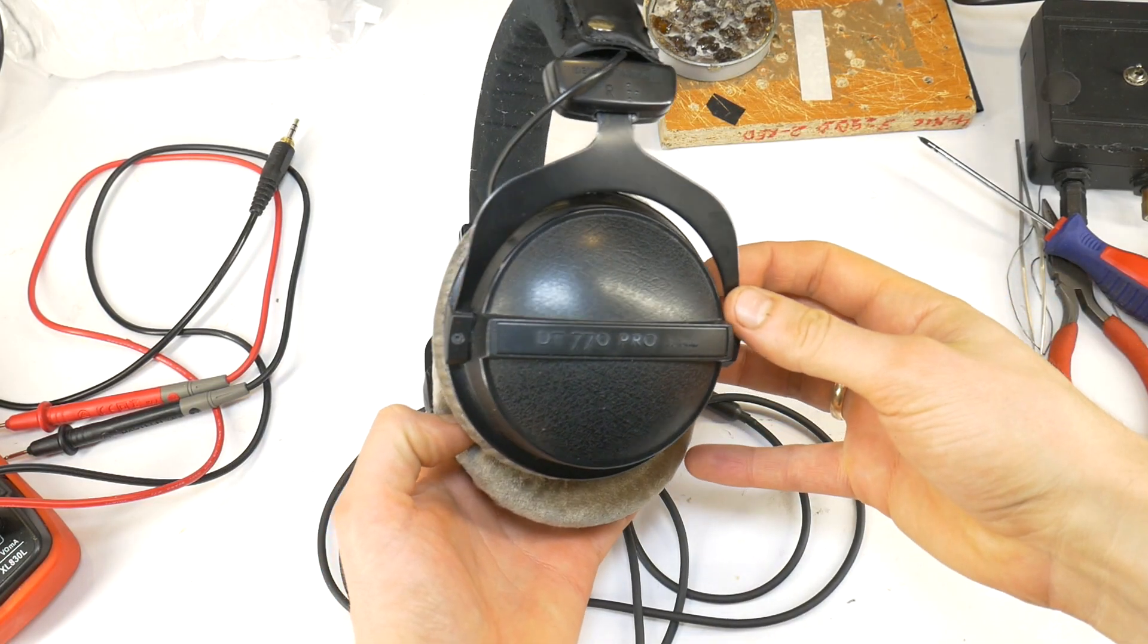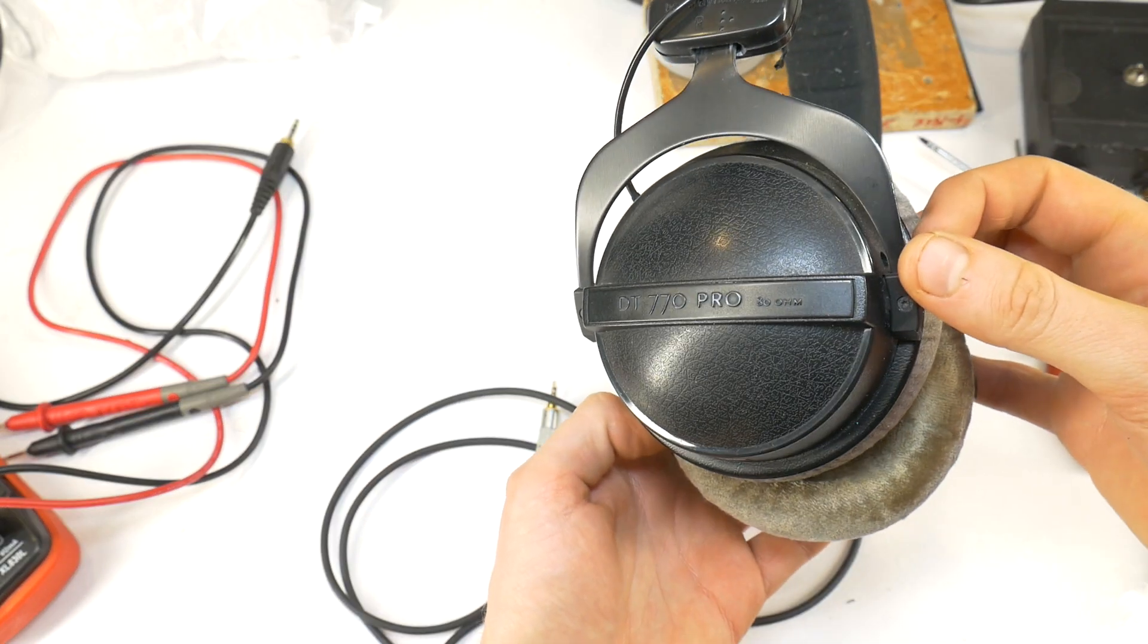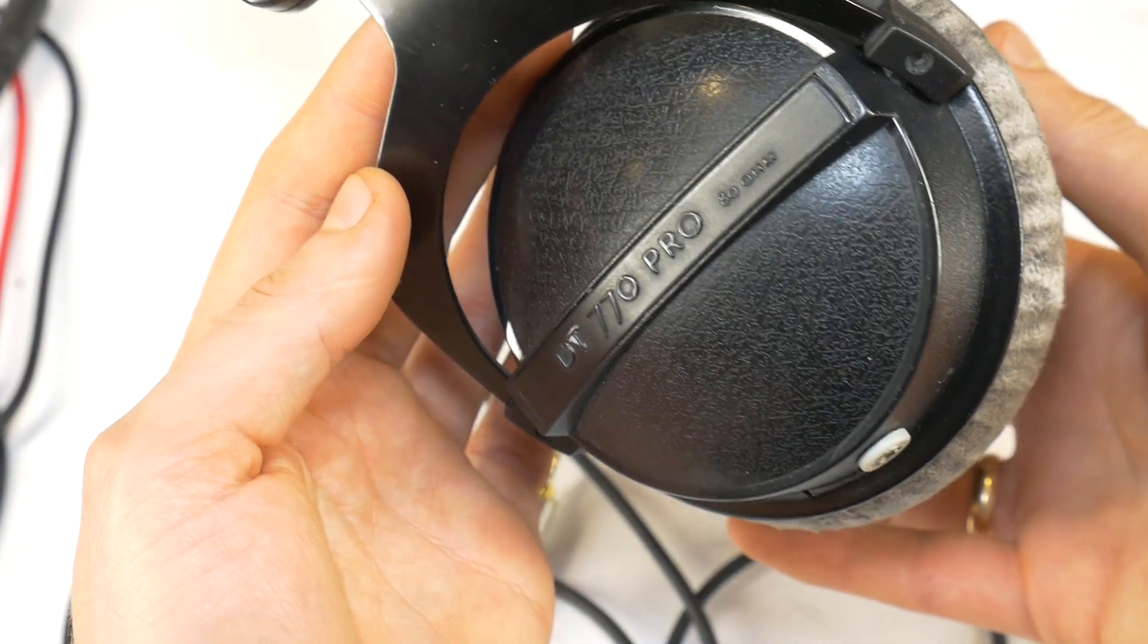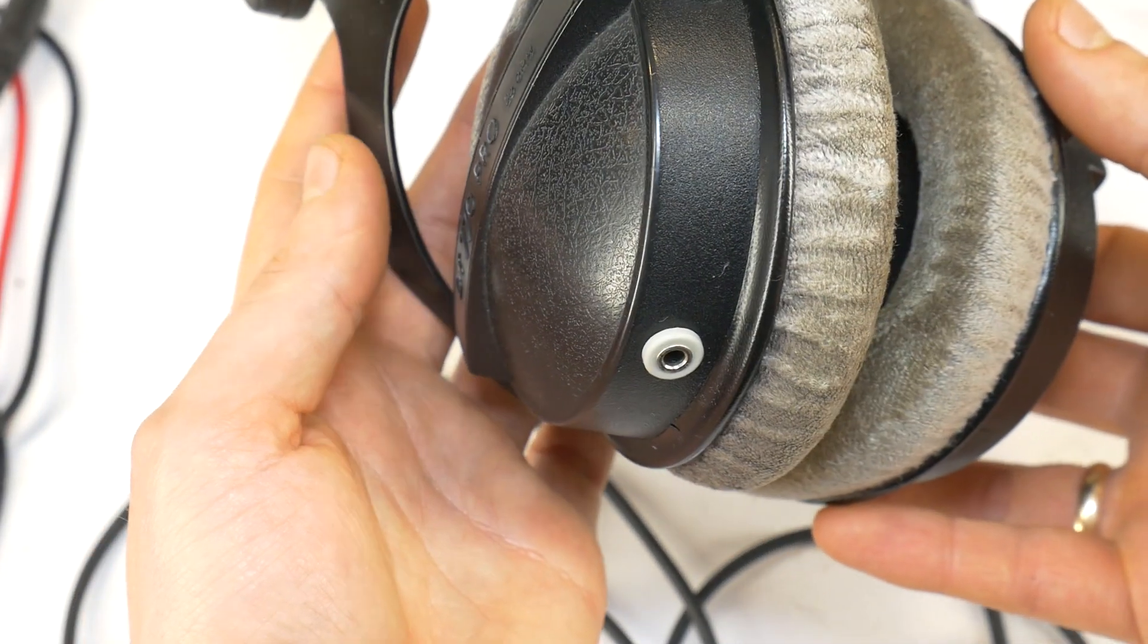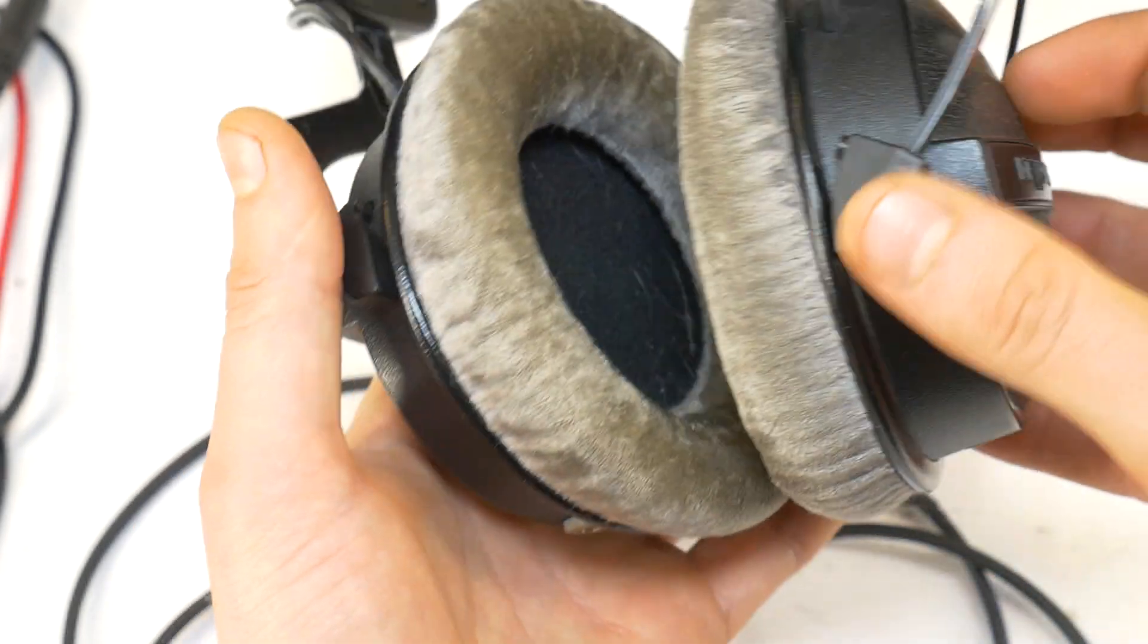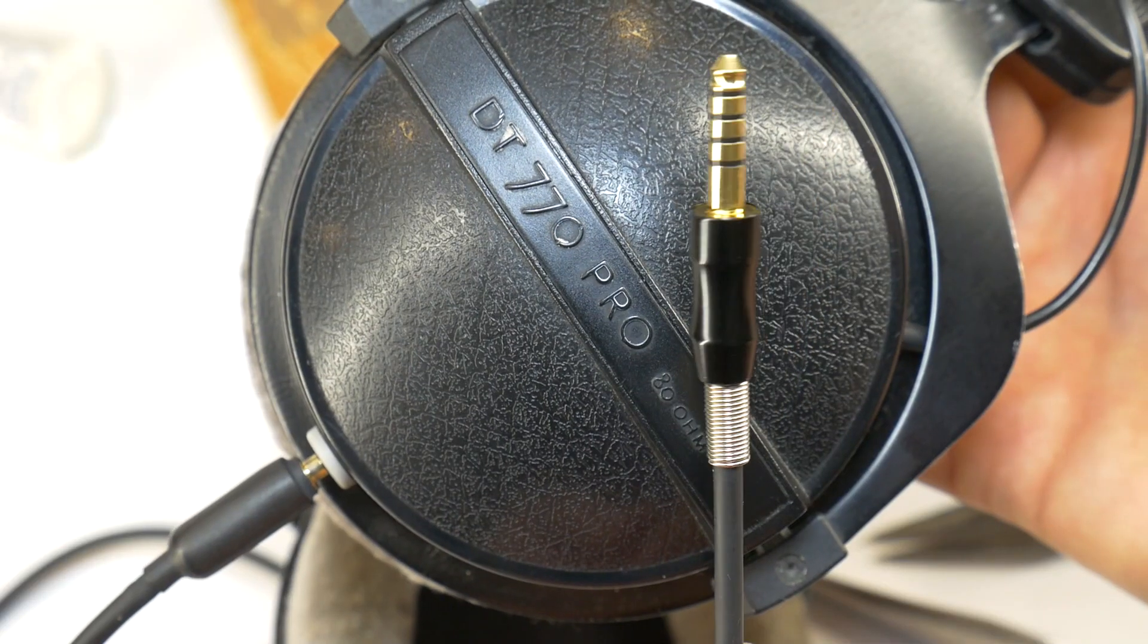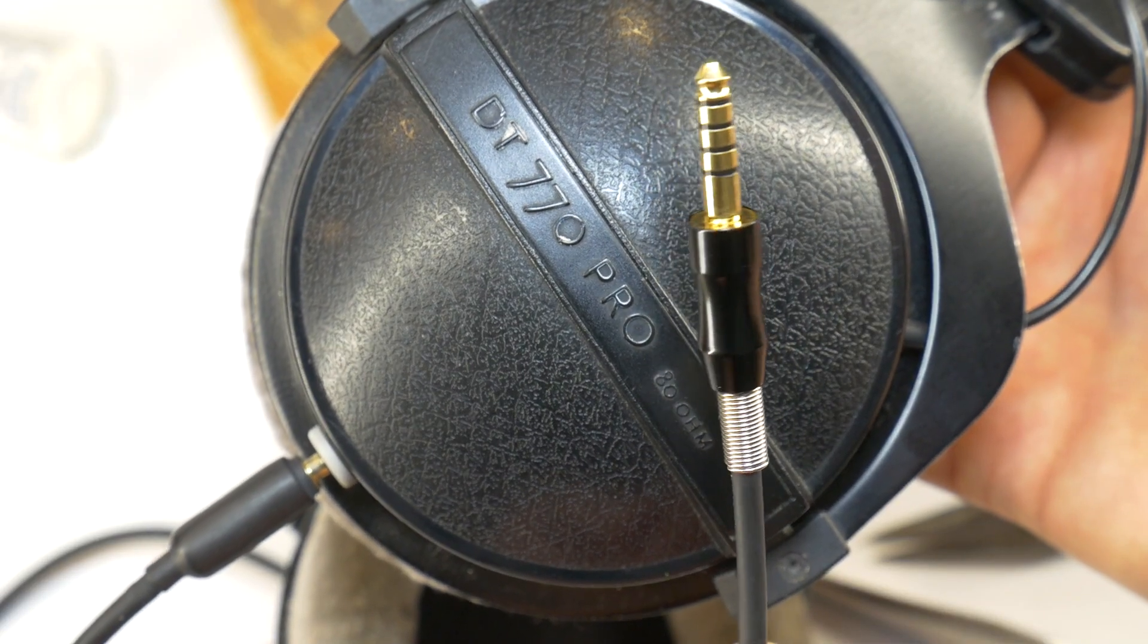Today's client is the popular Beyerdynamic DT770 Pro Studio Class headphones, which previously had a detachable cable mod. You can check out the previous video to see how to make a detachable cable mod. But today I will show you how to easily and cheaply make a 4.4mm jack balanced headphone audio cable.